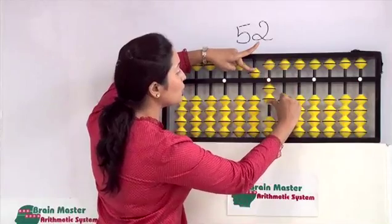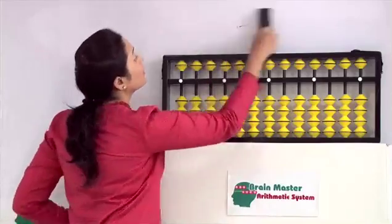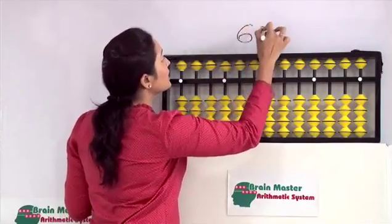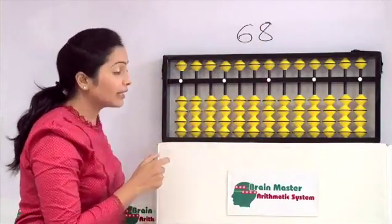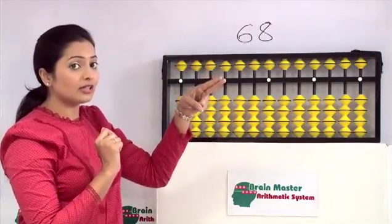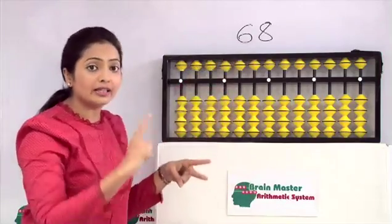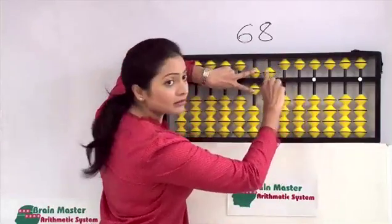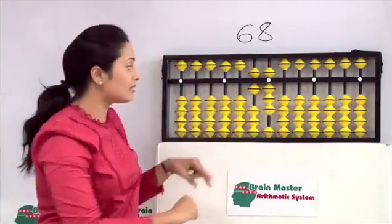Now one more example: if I want 68, how will I do 68? Again, in 68 you will use both the fingers of left hand - one forefinger and middle finger. Just see how am I doing it. Okay friends, I hope you understood the working of tens rod.